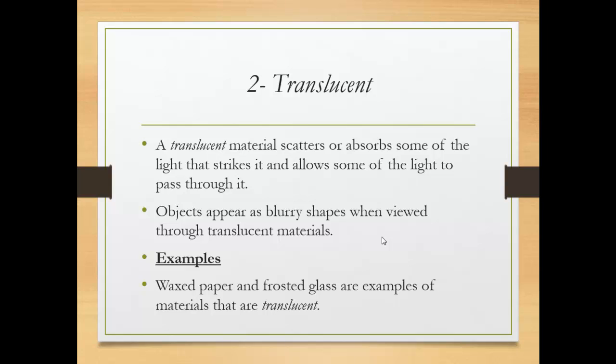The second one, translucent material. It absorbs some of light and allows some of light to pass through it. Objects appear as a blurry shape when viewed through translucent material. So, not being very clear.